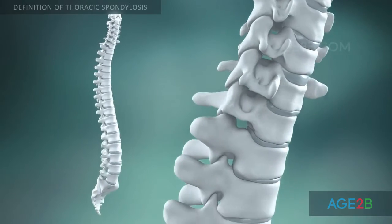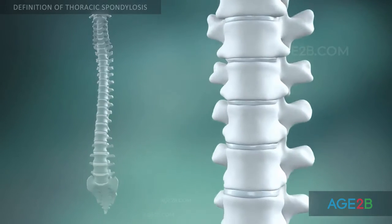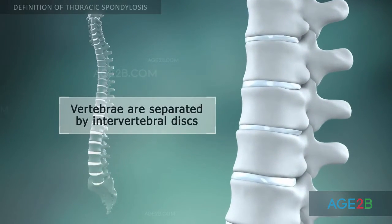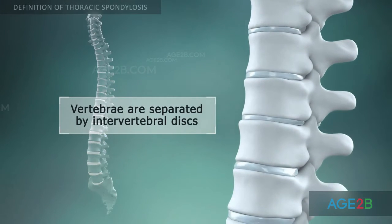The spine is made up of 33 individual bones called vertebrae, which are separated by intervertebral discs.